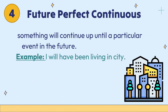The last one is future perfect continuous. It is something that will continue up until a particular event in the future. For example: I will have been living in a city.